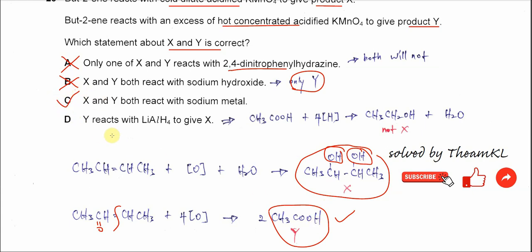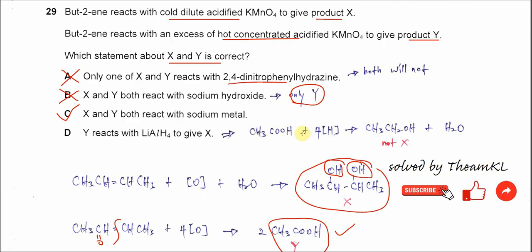D is wrong. Y reacts with lithium aluminum hydride to give X. If Y, we know that is ethanoic acid. So ethanoic acid undergoes reduction. It can reduce to the primary alcohol. From this ethanoic acid, it will reduce to ethanol. So the ethanol is not X. X is the diol here. So therefore, this statement is wrong.